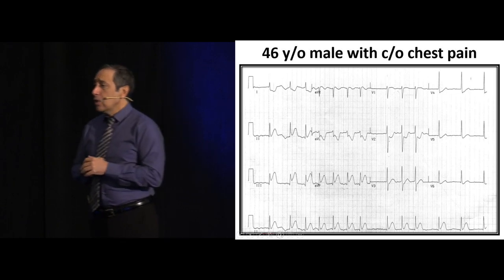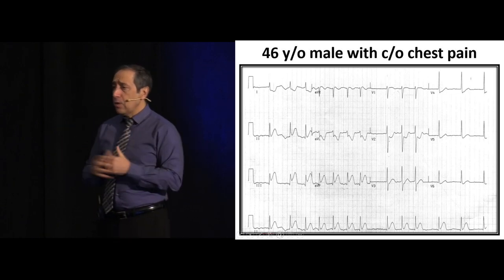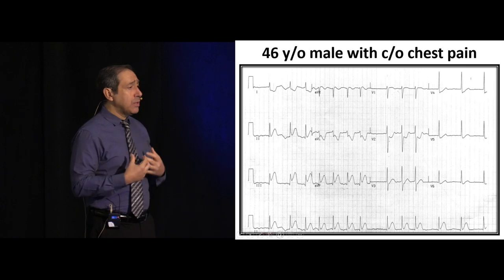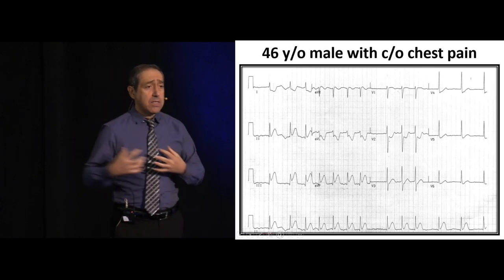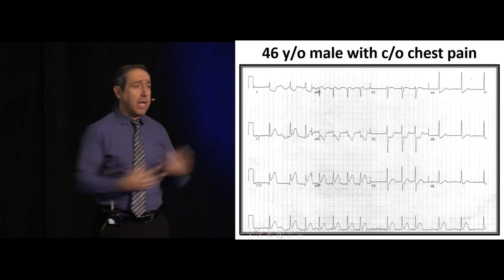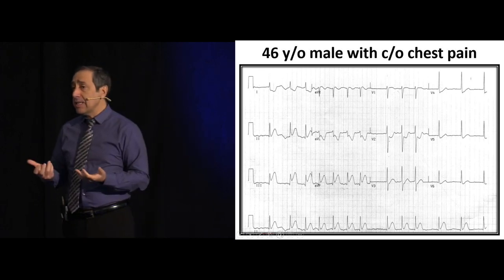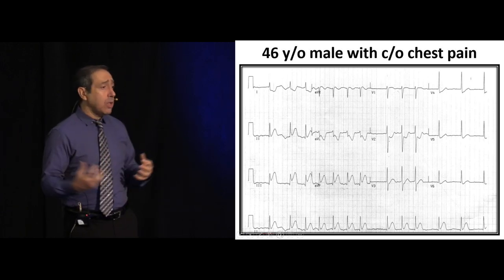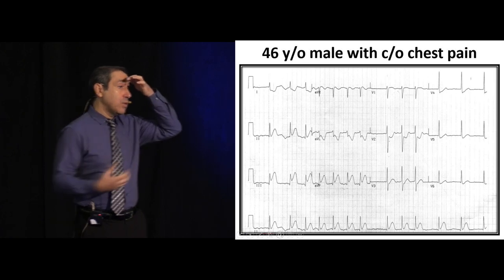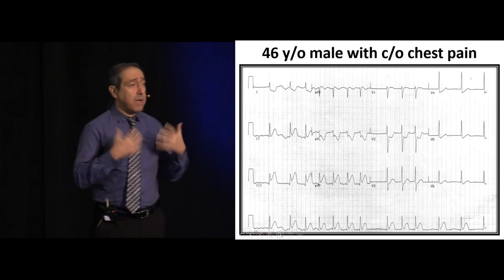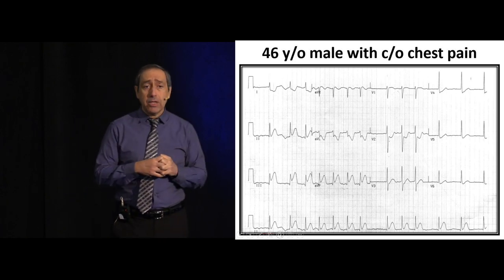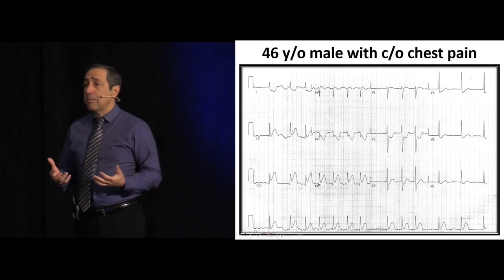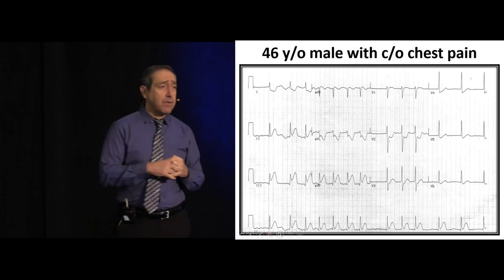The most important consideration among all of those is the right ventricle, because when the right ventricle is involved, you are very much preload dependent. Your right ventricle is not pushing as much blood to the other side, so you can be hypotensive. If you give nitrates, beta blockers, or morphine — all of which reduce preload — that's going to cause hypotension. IV fluids are very important in patients with right ventricular involvement.